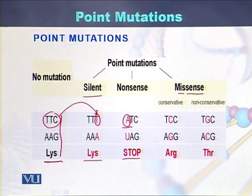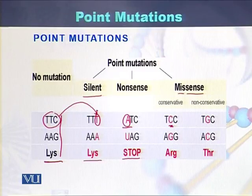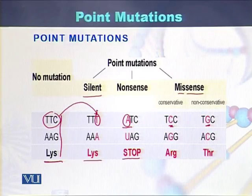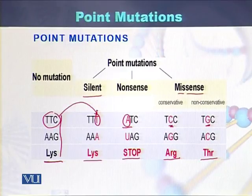The third type is missense mutations. In the original sequence there was T, but in one case T is replaced by C, and in another case T is replaced by G. The original amino acid was lysine, but in the first case it becomes arginine, and in the second case it becomes threonine.